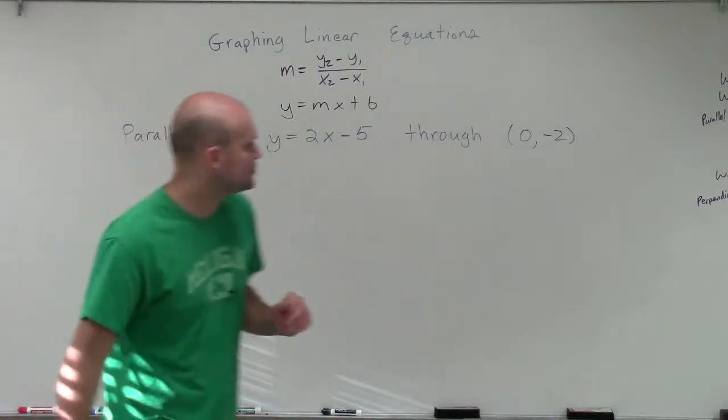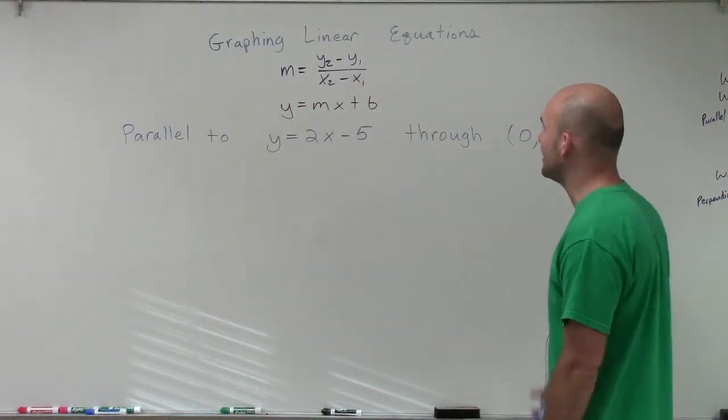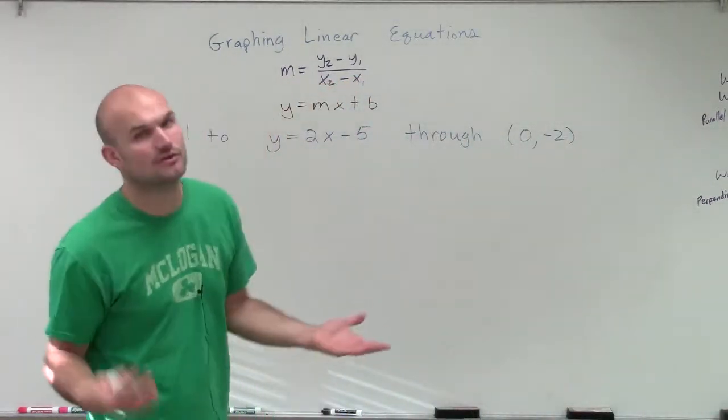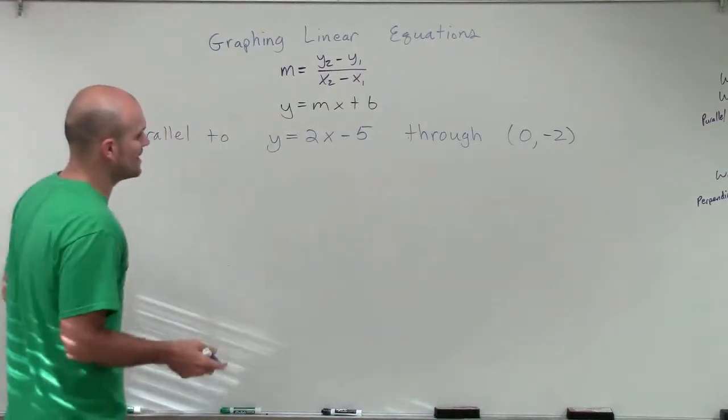Welcome. I'm going to show you how to graph a line that's parallel to the equation y equals 2x minus 5 and goes through the point 0, negative 2. We don't have to graph all these, but for this first example, that's exactly what I'm going to do, just so you can get an idea of what we're trying to do.